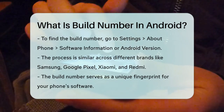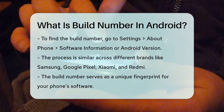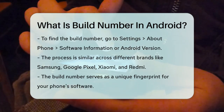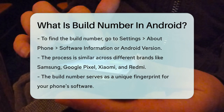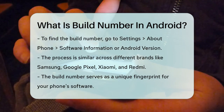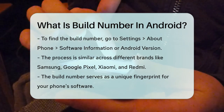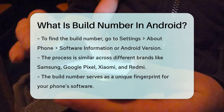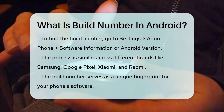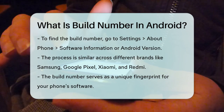For example, on a Samsung Galaxy phone, you go to Settings, About Phone, Software Information. On a Google Pixel, it's Settings, About Phone, Android Version.